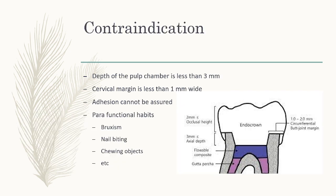What are the contraindications? First, the depth of the pulp chamber should be at least 3 mm to provide good retention and resistance for the endocrown. The cervical margin should not be less than 1 mm wide, with a preferred width of 2 mm and above. If adhesion cannot be assured, do not go for an endocrown. And whenever the patient has parafunctional habits, do not proceed until those habits are treated and eliminated.